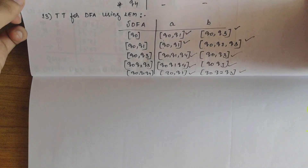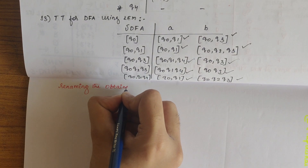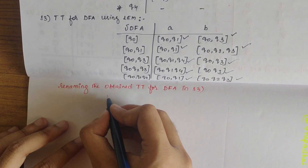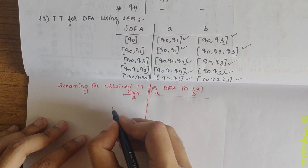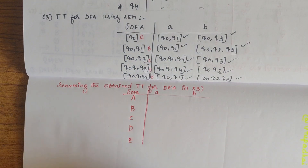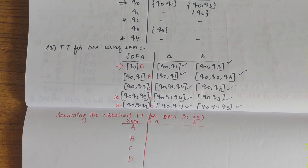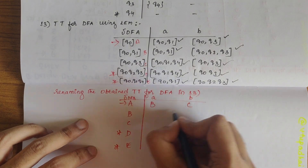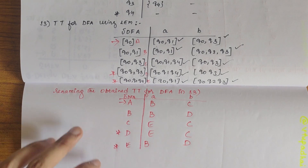Our next step is renaming the obtained transition table for the DFA for simplification. We rename the states as A, B, C, D, and E. The start state is wherever Q0 appears, and the final states are wherever Q2 or Q4 appear. Now let's fill in the renamed transition table: the entries become B, C, B, D, E, C, E, C and B, D.